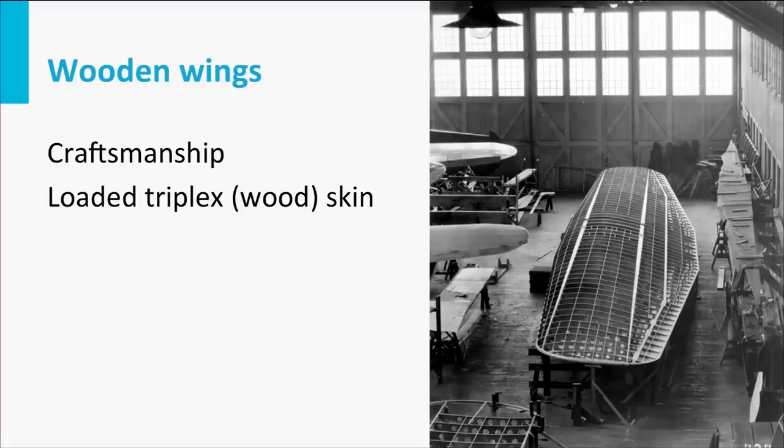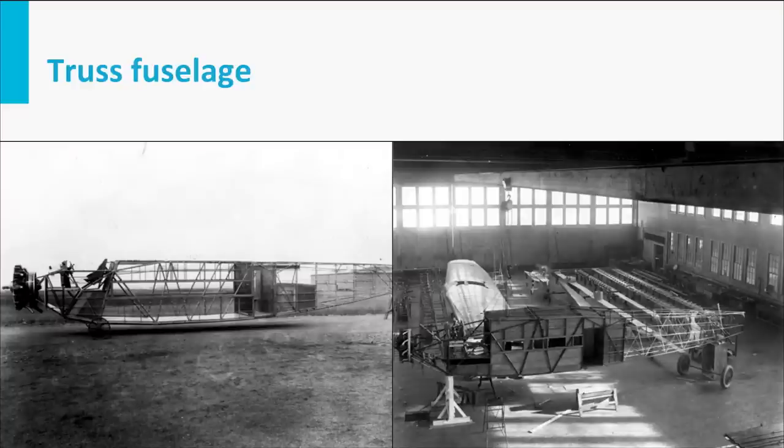This wing was entirely made of wood, which could only be made by skilled carpenters — many of them were available in those days. The fuselage of the Fokker FVII was a truss structure. On the picture on the left you see a full truss structure. In the picture on the right, some kind of wooden cabin is created for the comfort of the passengers. In both cases the tubes and bars carry the loads and provide sufficient protection from the atmosphere, partially provided by the linen skin.